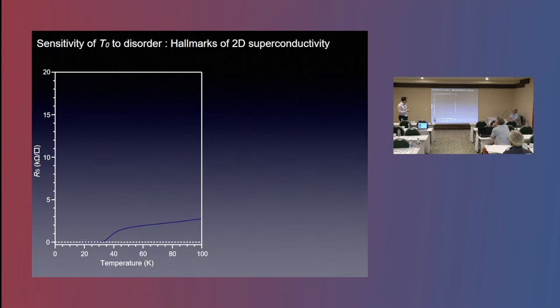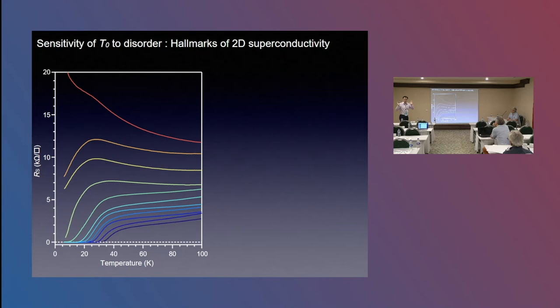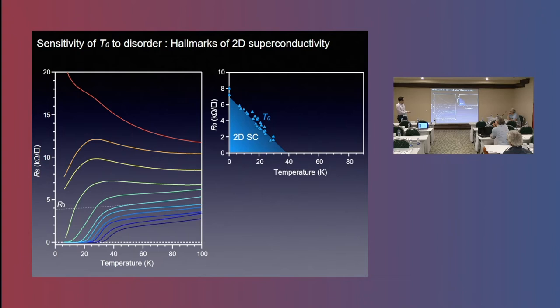We've looked at a lot of different samples. If you compile data across a large number of samples, these are all nominally the same sample that we tried to grow. But sometimes you get better samples than others. This wasn't a deliberate disorder control experiment, but rather just a compilation of all our data. You can see that there's a very clear correspondence between TC and the normal state resistivity. If we extrapolate the residual resistivity for each one of these compounds and plot it as a function of where we see the resistance go to zero, you get a very clear correspondence between T naught and the residual sheet resistivity here.